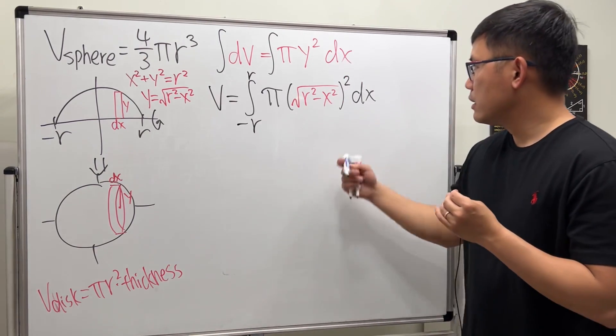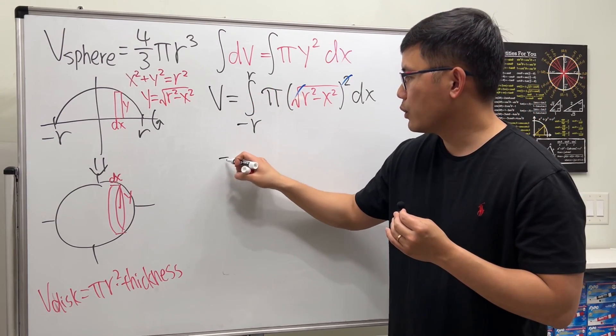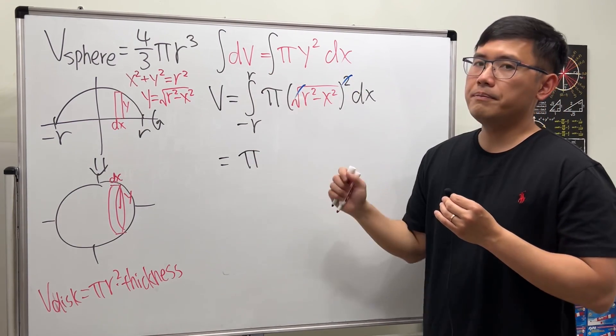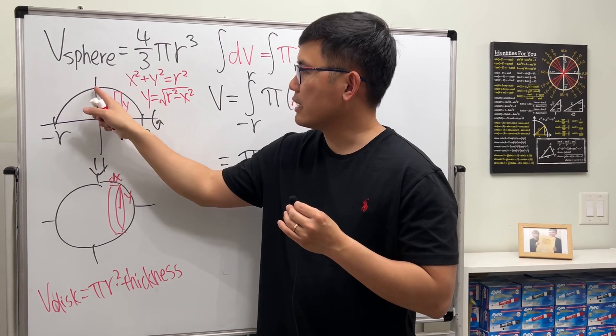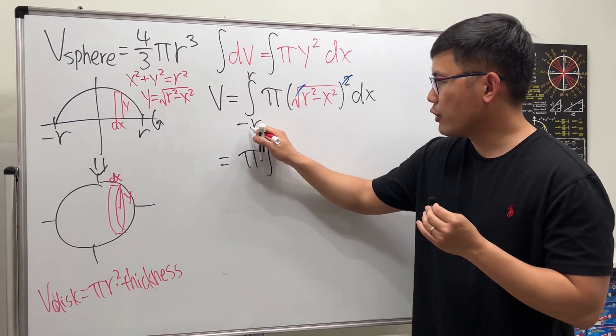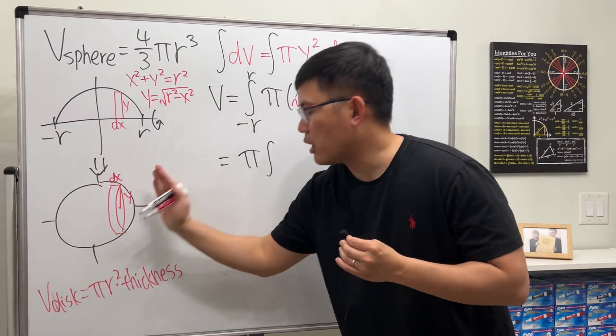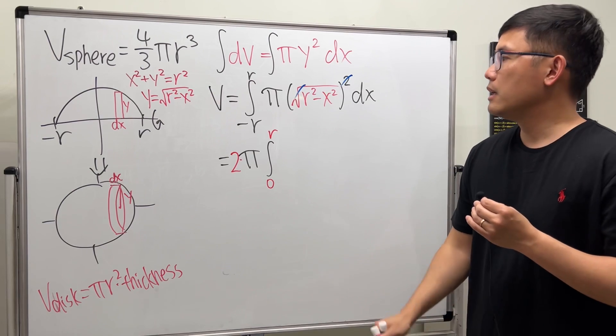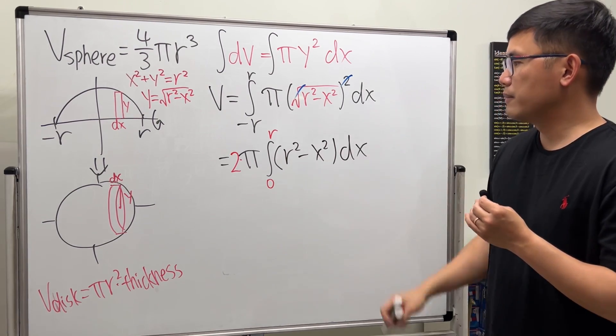Now, have a look. Square and square root cancel very nicely. And π is just a constant, so we can put that outside. So, we have π here. Have a look. This integral goes from -r to r. And this right here is actually an even function. You can just look at the picture right here as well. Whatever you have on the left, you have the same thing on the right. So, we can actually just integrate this by instead of going from -r to r, just go from 0 to r and then double the result. 0 to r and then I will double the result. And then right here we have parentheses and then this is just r² - x² and then dx.